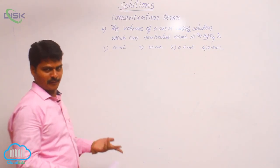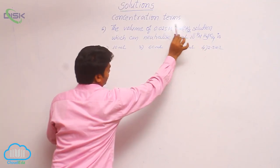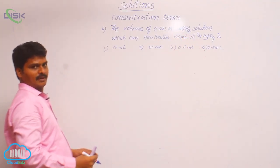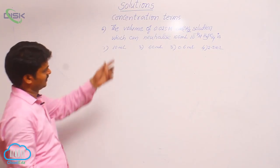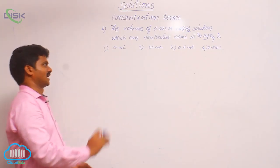Normality means equivalence. Here two terms, one is H3PO4, other one calcium hydroxide. H3PO4 is an acid whereas calcium hydroxide is a base, that means it is an acid base neutralization reaction.